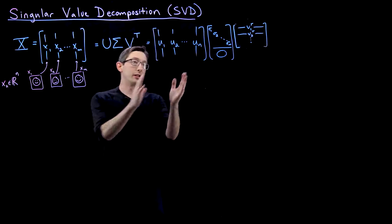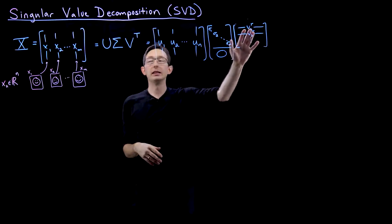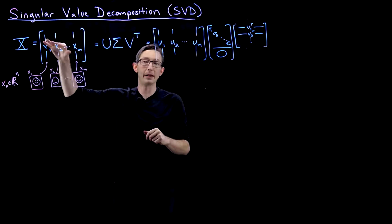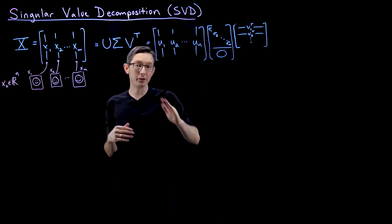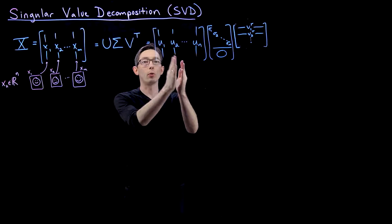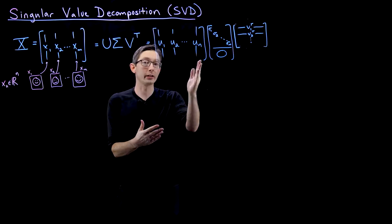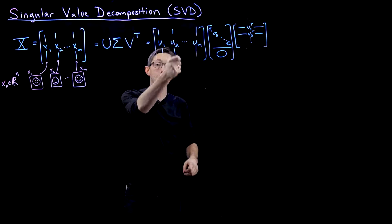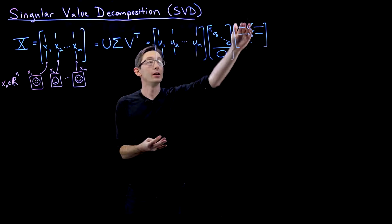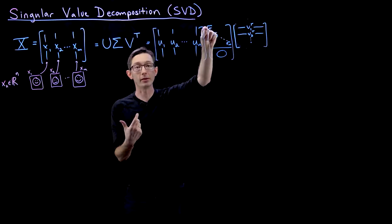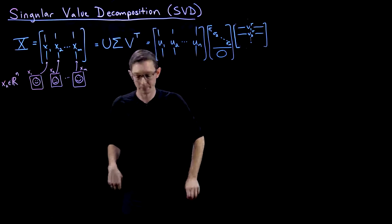U contains information about the column space of X, V contains information about the row space of X, and sigma is a diagonal matrix that tells you how important the various columns of U and V are. They're hierarchically arranged so that U1 is more important than U2, which is more important than U3, and so on. Same with V. The importance is encoded in the singular values, sigma.